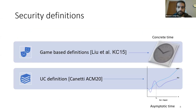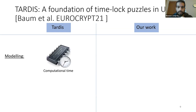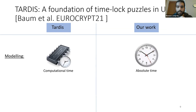Regarding security definitions, all existing definitions in the literature are game-based and assume the adversary operates in concrete time, so we cannot argue composability because time-lock has not been studied in the UC framework where the adversary operates in asymptotic time. There is a work recently published at Eurocrypt called TARDIS: a foundation of time-lock puzzles in the UC framework. It has many similarities with ours, but there are also many differences. The first difference is in the modeling: in TARDIS they assume a message can be retrieved after some computations have been done; in our case a message can be retrieved when a specific time has been reached, which we believe more naturally captures the concept of time-lock encryption.